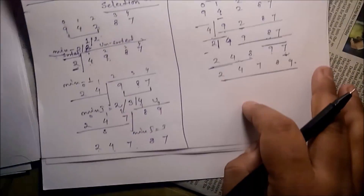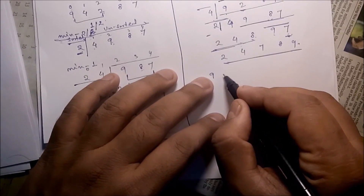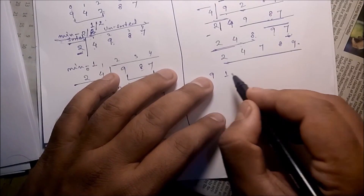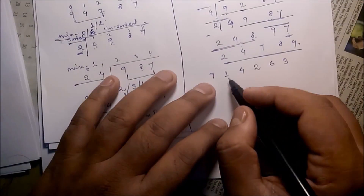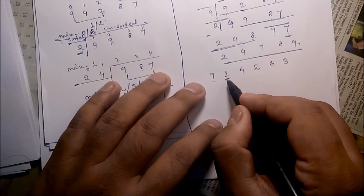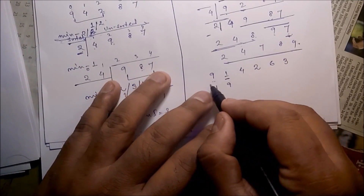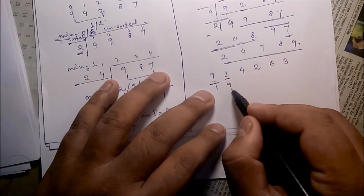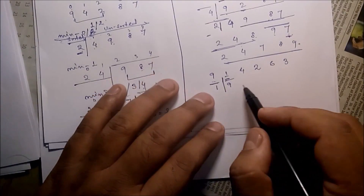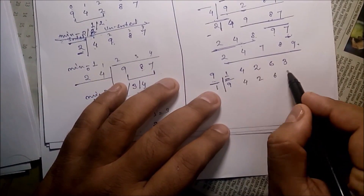Now we can take another example. Suppose: 9, 1, 4, 2, 6, 3. Starting from here, compare 1 and 9 — 1 is lesser than 9. So sorted part on the left, unsorted part on the right. Now take the value 4.